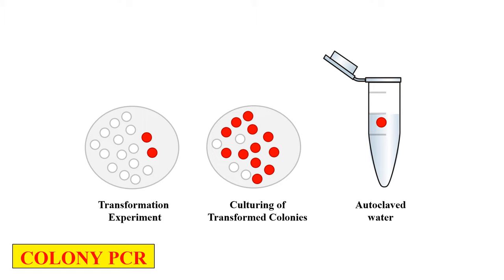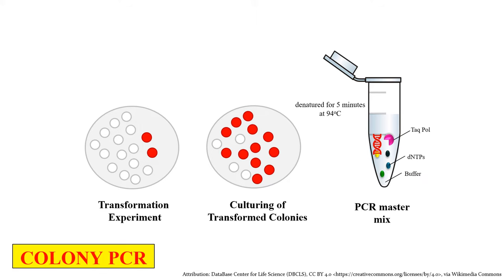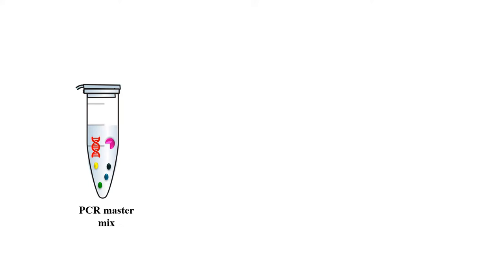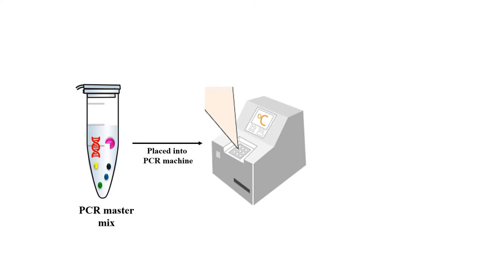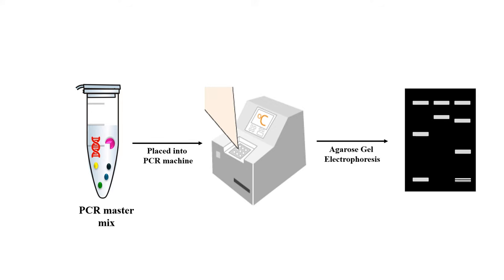After culturing, we pick a single colony and add it to autoclaved water in a PCR tube. We then denature it for 5 minutes at 94 degrees centigrade, which releases the DNA into the autoclaved water. Then we add Taq polymerase, dNTPs, and buffer — the complete PCR master mix — and proceed with traditional PCR. The PCR product is analyzed by agarose gel electrophoresis, which gives us bands to analyze our products.